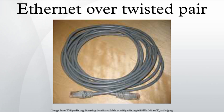Ethernet over twisted pair technologies use twisted pair cables for the physical layer of an Ethernet computer network. Early Ethernet cabling had generally been based on various grades of coaxial cable, but in 1984,